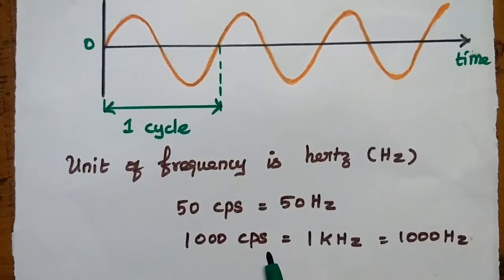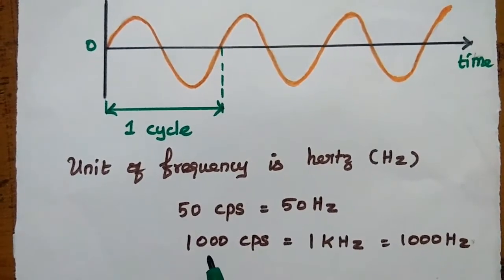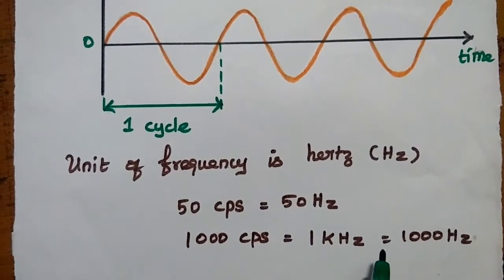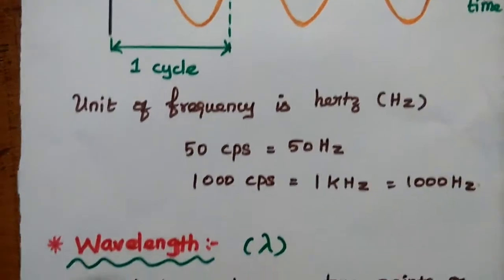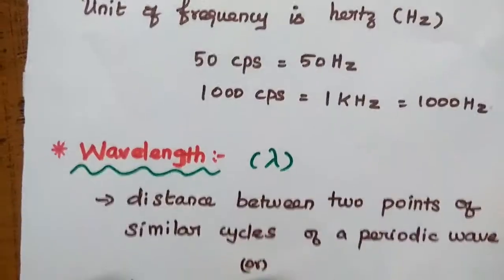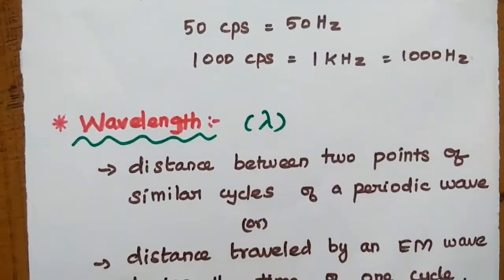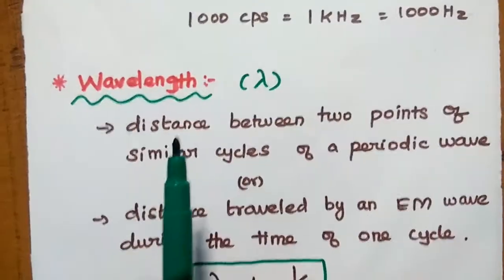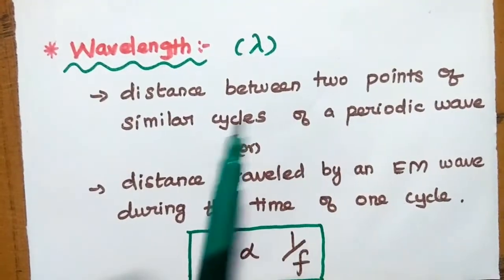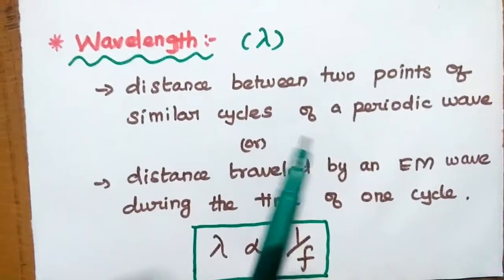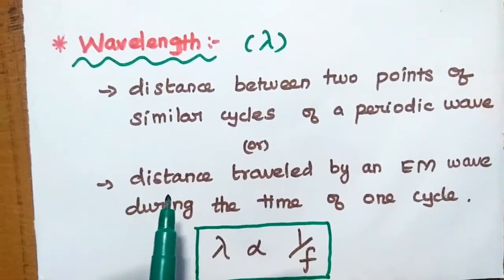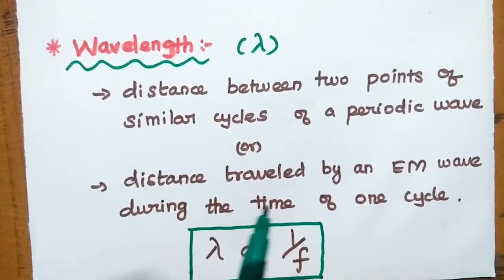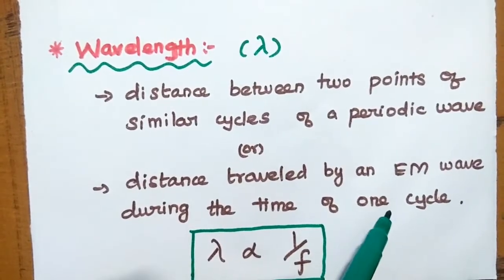One thousand cycles per second is represented as one kilohertz, or 1000 hertz. The next term is wavelength, represented as lambda. Wavelength is the distance between two points of similar cycles of a periodic wave, or the distance traveled by an electromagnetic wave during the time of one cycle.